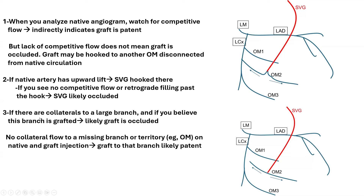The third major tip: on your native or graft angiography, if there are collaterals to a large branch and you believe that branch is grafted, then that graft is occluded. Conversely, if you have a large territory with no flow, or what seems to be a large missing branch with no collateral filling on the native and other graft injections, then the graft to that territory is likely patent. If it were occluded, you would have seen collateral filling.